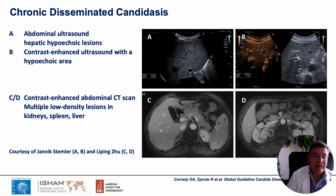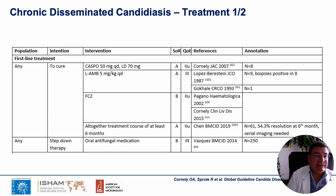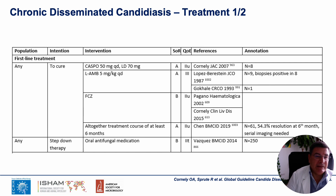Here are some pictures reported in this guideline that are quite similar to those we observed previously. Regarding treatment — for all patients, not only hematological patients — caspofungin is identified as the main drug, with liposomal amphotericin B as an alternative at a higher dosage than usually used: 5 mg per kg. All other drugs are less relevant for the treatment of chronic disseminated candidiasis.